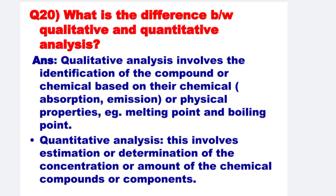Next: What is the difference between qualitative and quantitative analysis? Qualitative analysis involves the identification of a compound or chemical based on its chemical and physical properties — for example, melting point and boiling point. On the other hand, quantitative analysis involves the estimation or determination of the concentration or amount of chemical compounds or components.